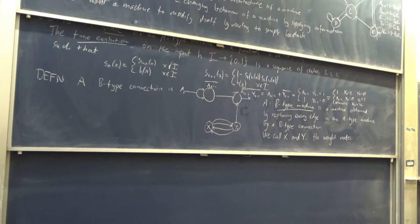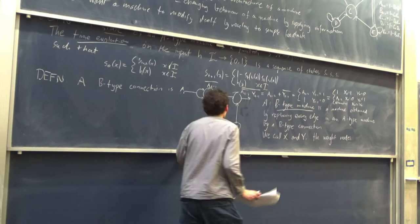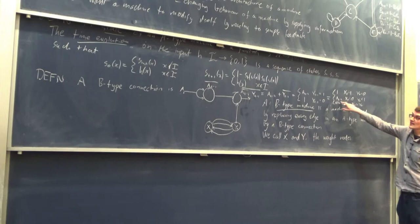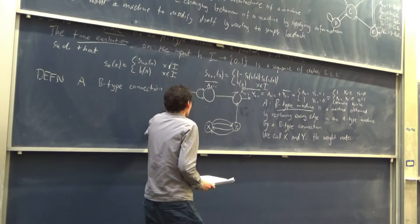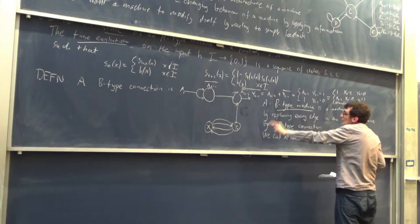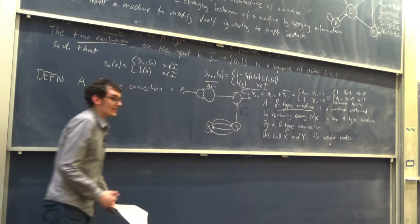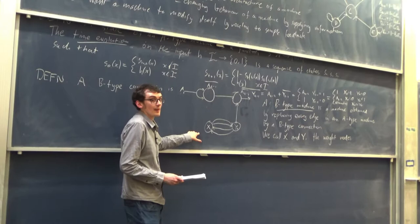The point is that depending on the value of these weight nodes, we can get this to act just as a normal A-type connection — ignoring the slight time delay from passing through more nodes — or we can override its input and give it the constant signal 1. So this thing essentially acts as a switch, and it's this that Turing has the idea of training. You could imagine supplying these things with appropriate inputs to change the behaviour of the machine quite drastically.